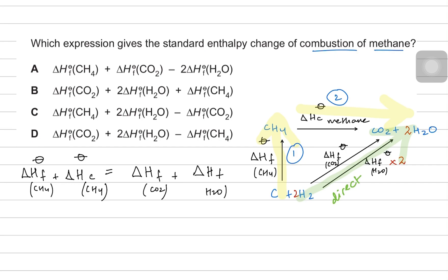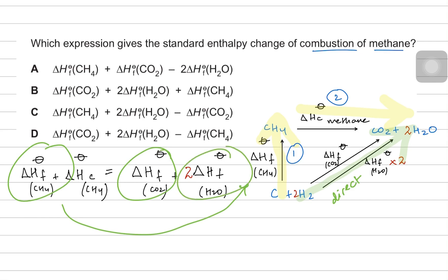Don't forget the 2 around water. Our equation becomes: formation of methane plus combustion of methane equals formation of carbon dioxide plus 2 times formation of water. Rearranging for combustion of methane: it equals formation of carbon dioxide plus 2 times formation of water minus formation of methane. Option D matches this expression, so D is the correct answer.